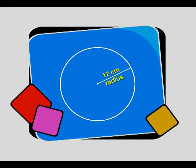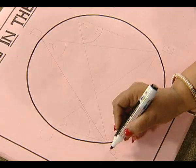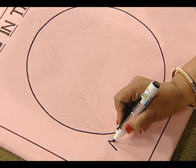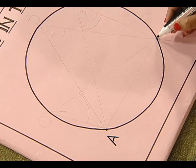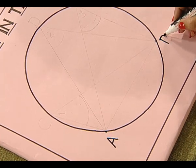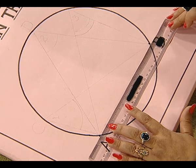Now to begin with, we take a circle of convenient radius — say 12 centimeters, as we have taken here. Now we mark two points on the circle, namely A and B. Let this be point A and this is point B. Now, with the help of a ruler, we join these points.